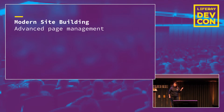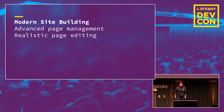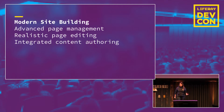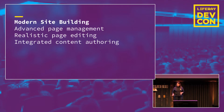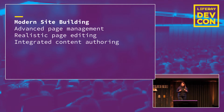The first pillar is advanced page management. The second one is realistic page editing. And the third one is integrated content authoring. Before we dig into features in 7.2, we wanted to revisit some concepts introduced in 7.1, which was the first version to include the Modern Site Building project.